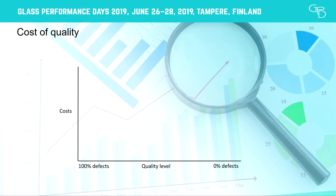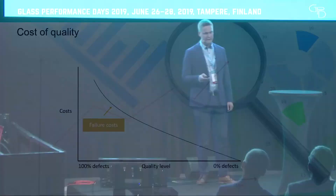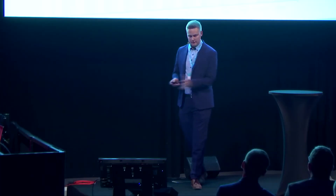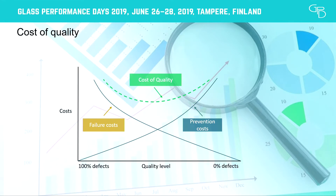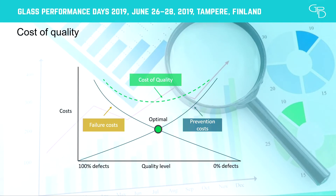To understand where you want to be, you really need to understand your own production and where your costs are coming from. The more failures you have, the more failure costs you'll have. As failures decrease, failure costs go down but prevention costs start rising rapidly. Once you understand both, you can define how much you are actually paying to make quality — and ultimately, you want to be where these two curves intersect.